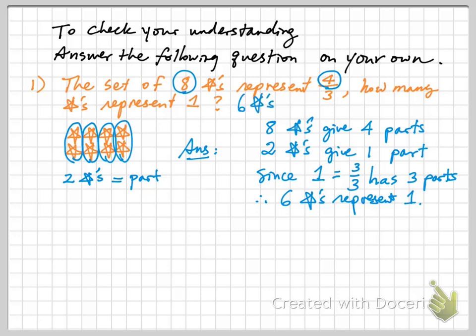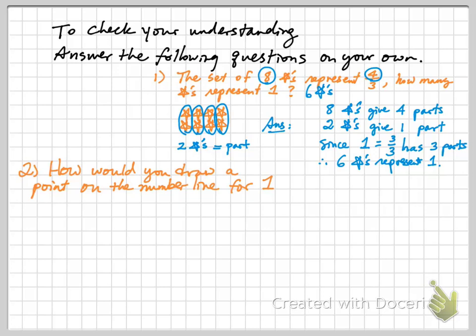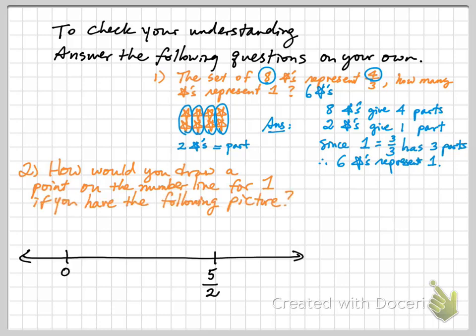If you didn't get that on the first try, that's okay. Let's practice another one. How would you draw a point on the number line for the location of one if you have the following picture? Again, take a moment to think about this and come back for an answer.